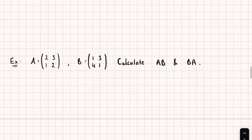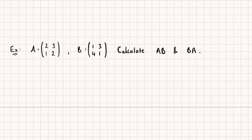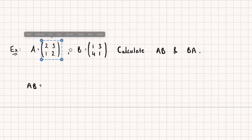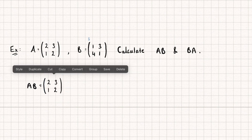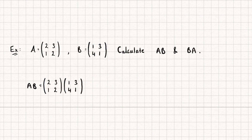Now when it comes to multiplying a matrix by another matrix there are some rules we need to be aware of. Here we have two matrices A and B and we are asked to first calculate AB. For matrix multiplication to occur, our left matrix — in this case matrix A — must have the same number of columns as the right matrix has rows. So let's write down the dimensions: we have a 2 by 2 matrix multiplied by another 2 by 2 matrix.